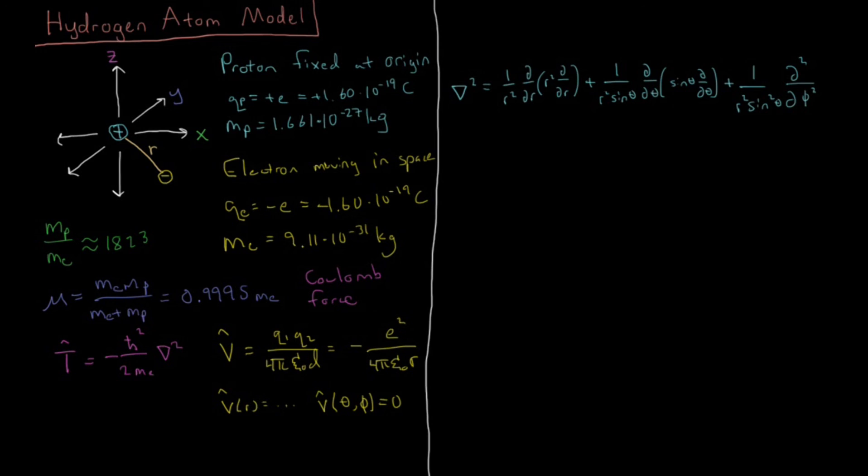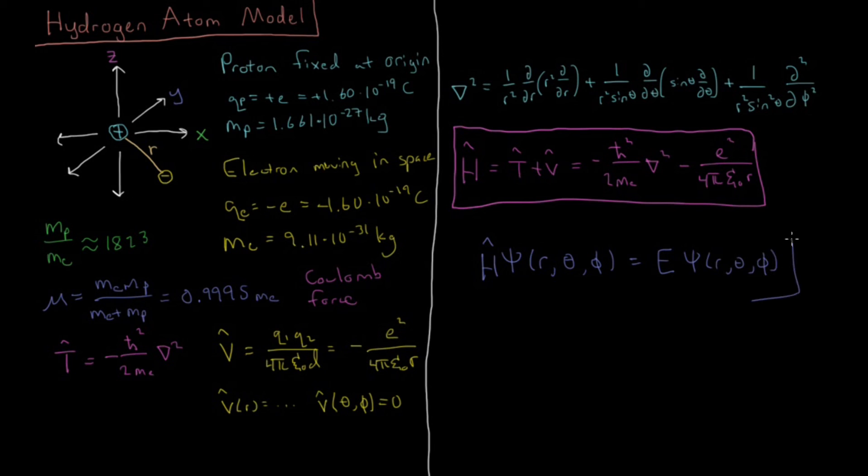So that makes our total Hamiltonian operator, h, which is t plus v, equals minus h bar squared over 2me del squared minus e squared over 4pi epsilon naught r. So, this is our Hamiltonian, and this is our Laplacian, for the hydrogen atom model, and we need to solve the equation h psi. Psi is going to be a function of r, theta, and phi, the spherical polar coordinates, equals the energies of the wave functions, times r, theta, and phi. So, we're going to see what the solution is, what energy levels we get, and what type of wave functions we get as a function of these three variables here.